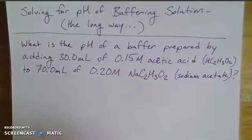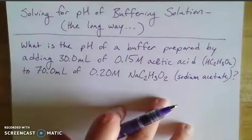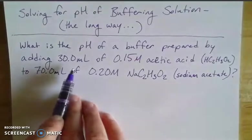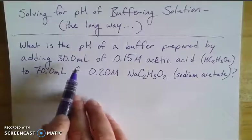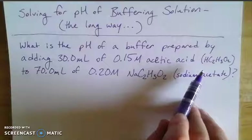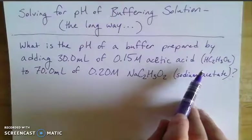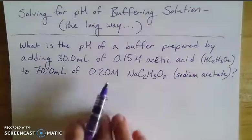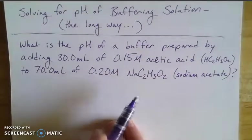So if we have a problem that looks like this: What is the pH of a buffer prepared by adding 30 mL of 0.15 molar acetic acid, which is essentially household vinegar, and then we have 70 mL of 0.2 molar sodium acetate.